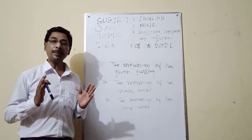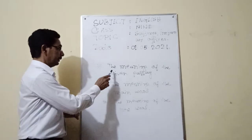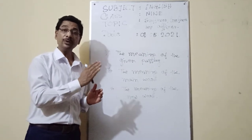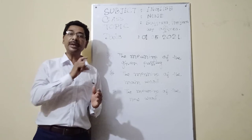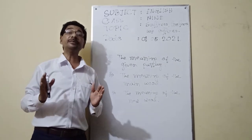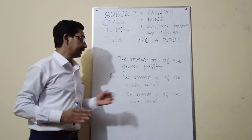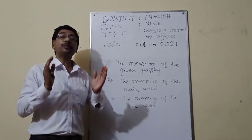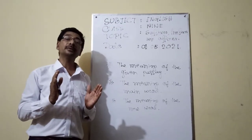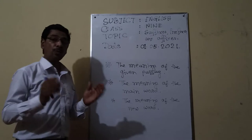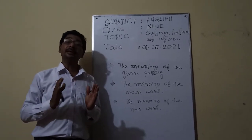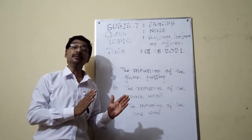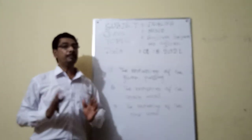First, you have to understand the meaning of the given passage — the passage you will find in the question paper. If you don't understand the meaning of the passage, it will not be easy for you to make suffixes, prefixes, and affixes. Secondly, you have to know the meaning of the key word. And lastly, when you make suffixes, prefixes, and affixes, you have to understand what the new word will mean.